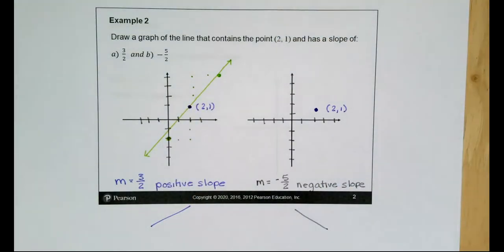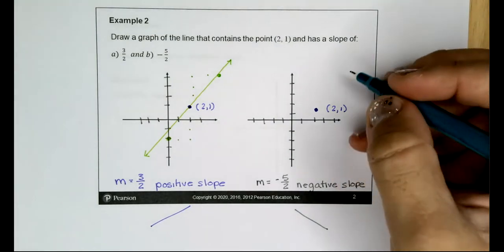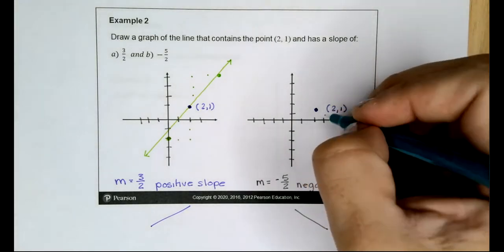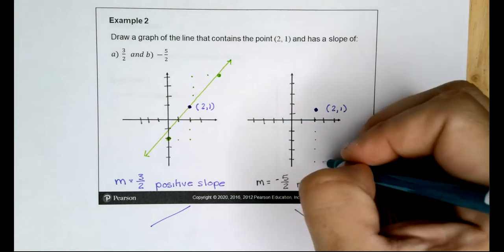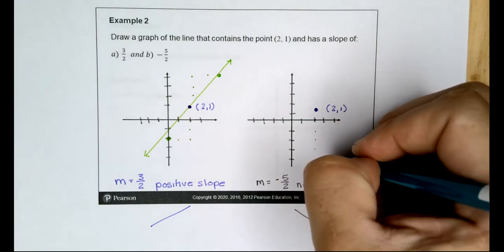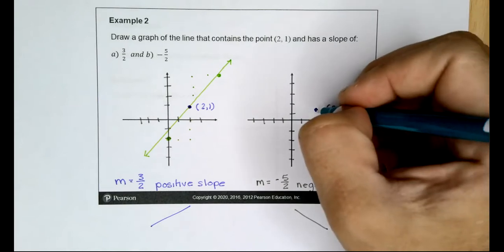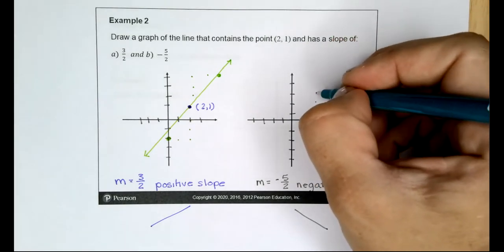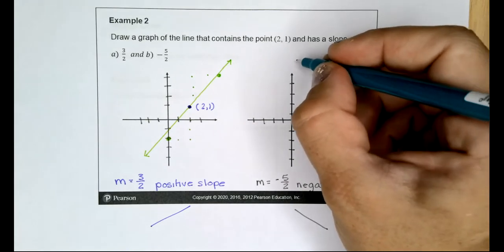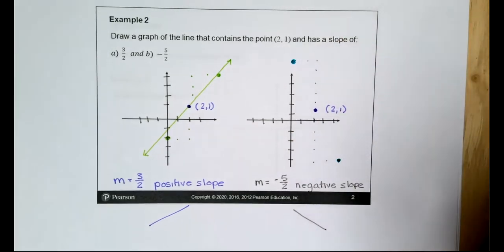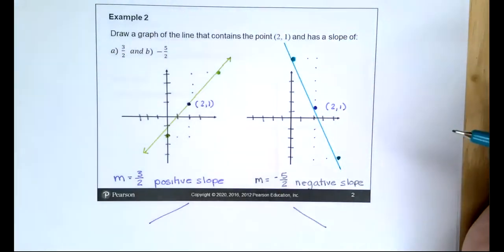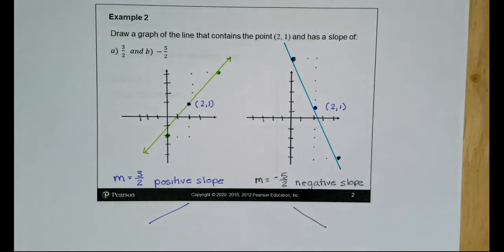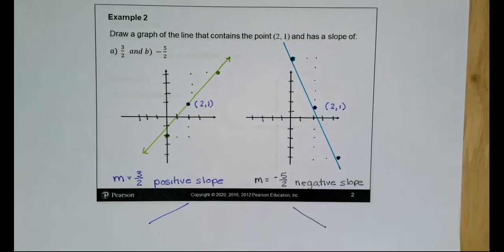For the negative slope of 5/2, I can go down 5 in y and positive 2 in x, or I can go up 5 in y and negative 2 in x. Either way, we get the negative slope line.